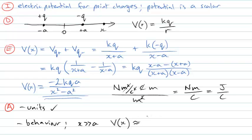So our potential will look a little bit like minus 2kqa over x squared. And that's what you might expect.